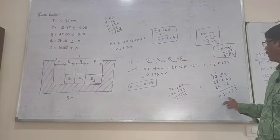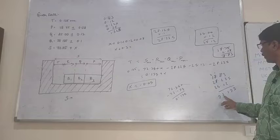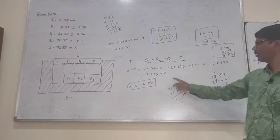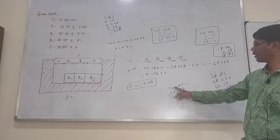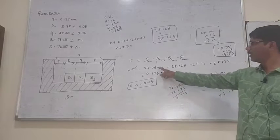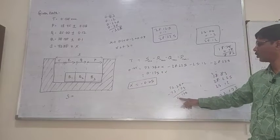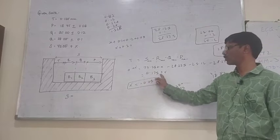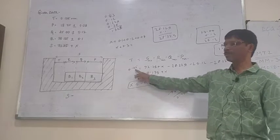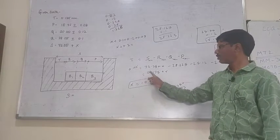This is 72.175, which becomes 72.135, and this is 0.175 and 0.125, so x equals 0.05.